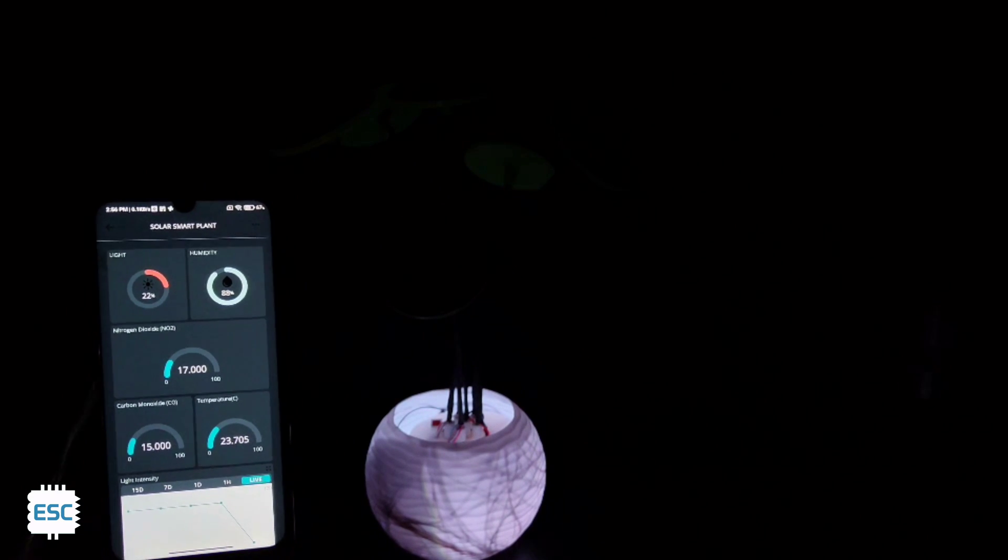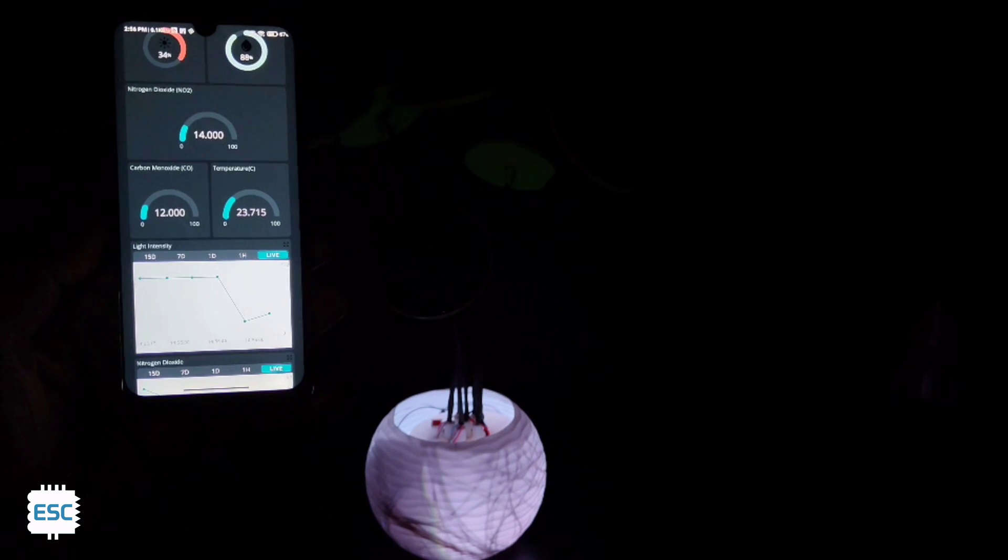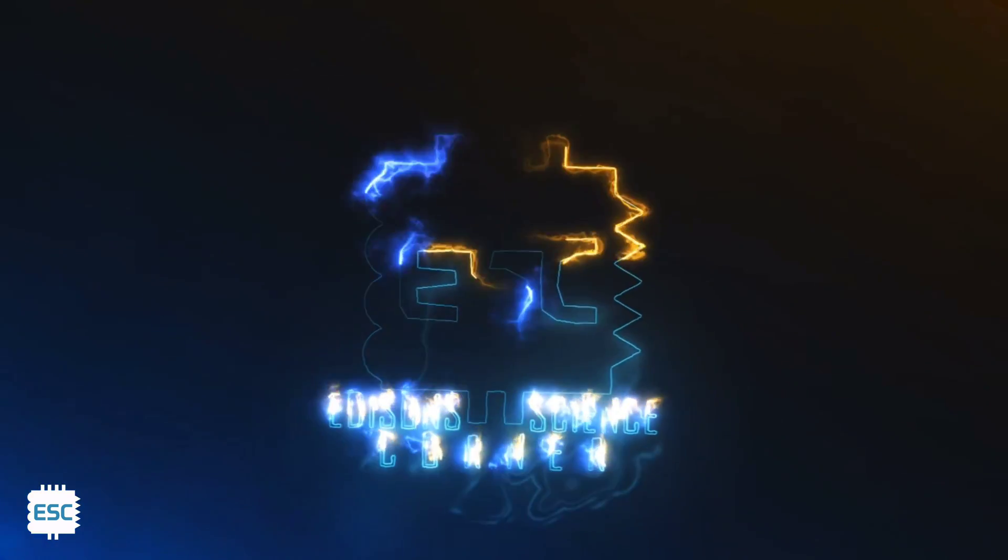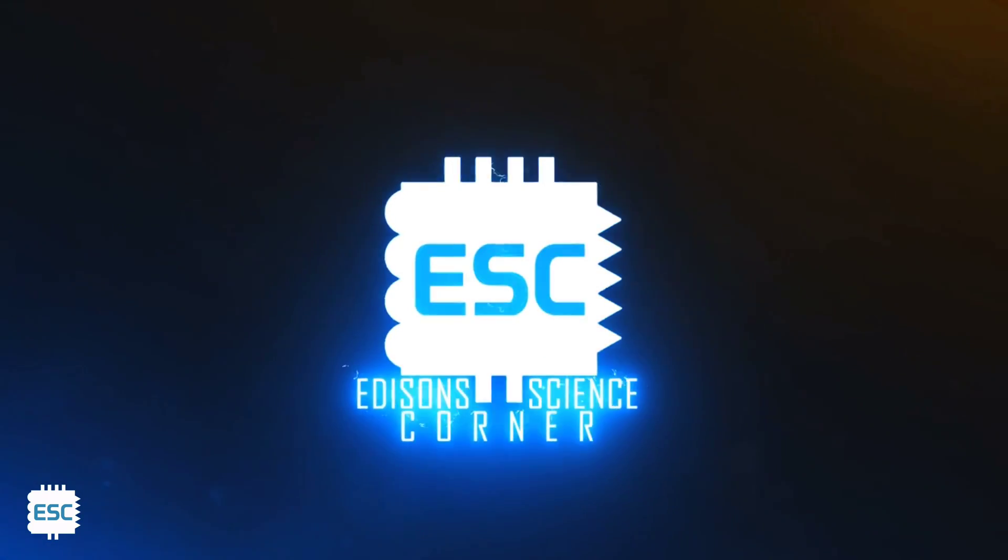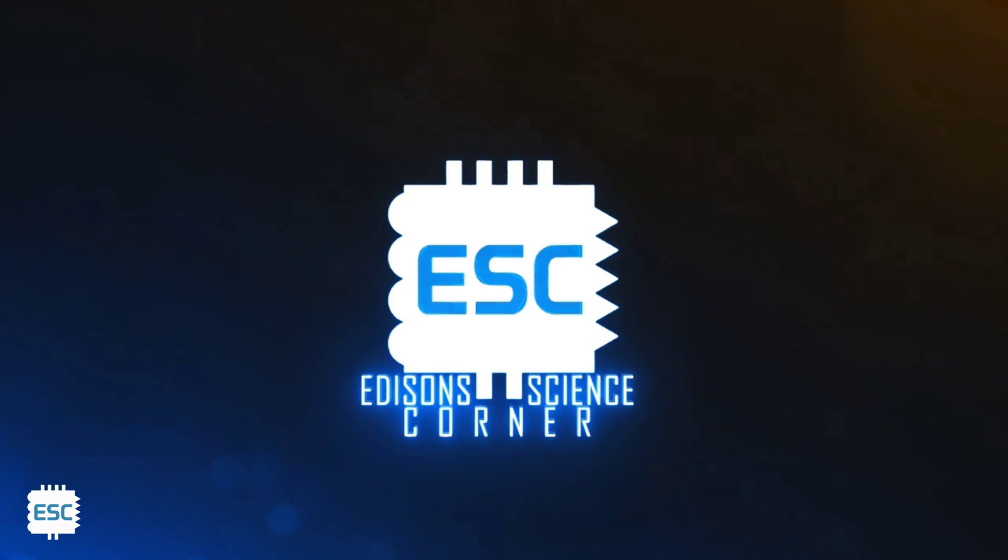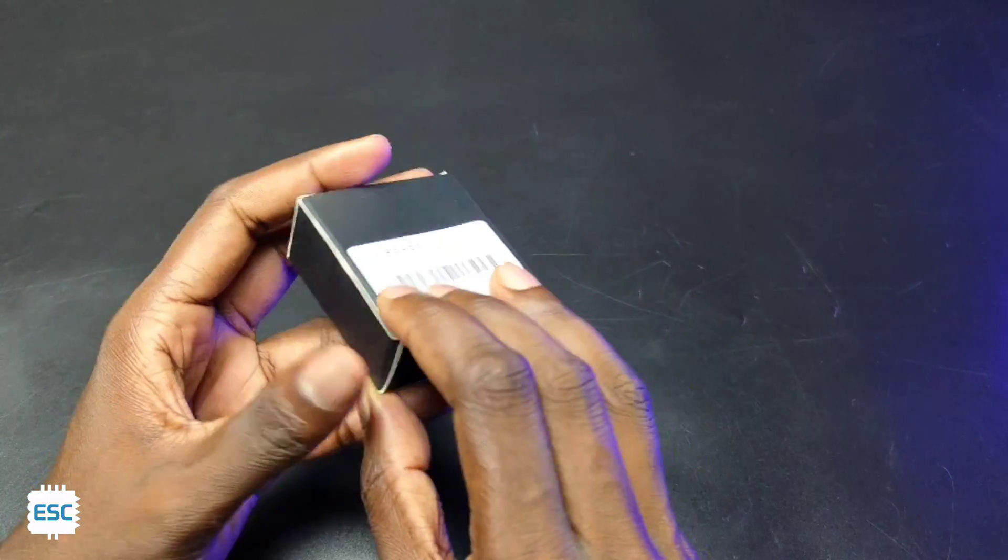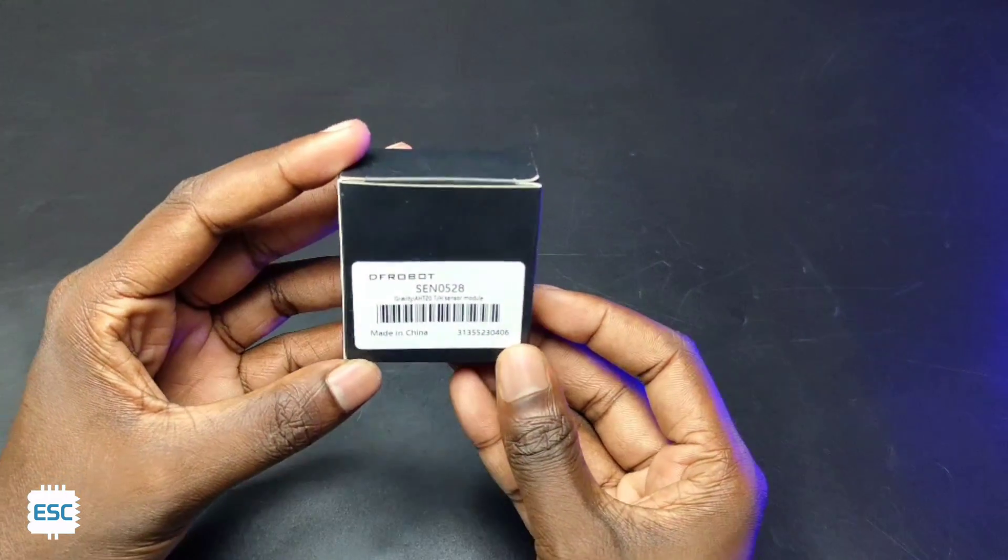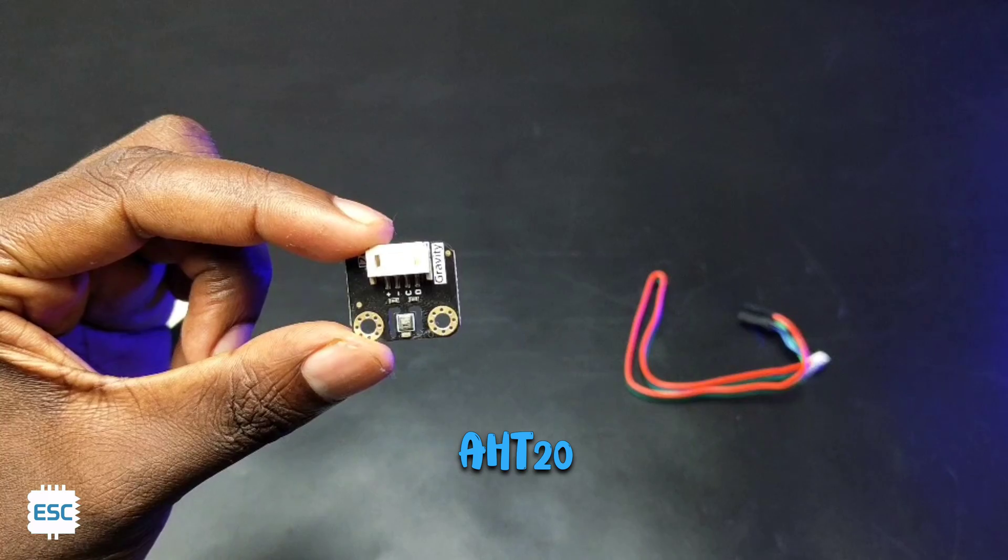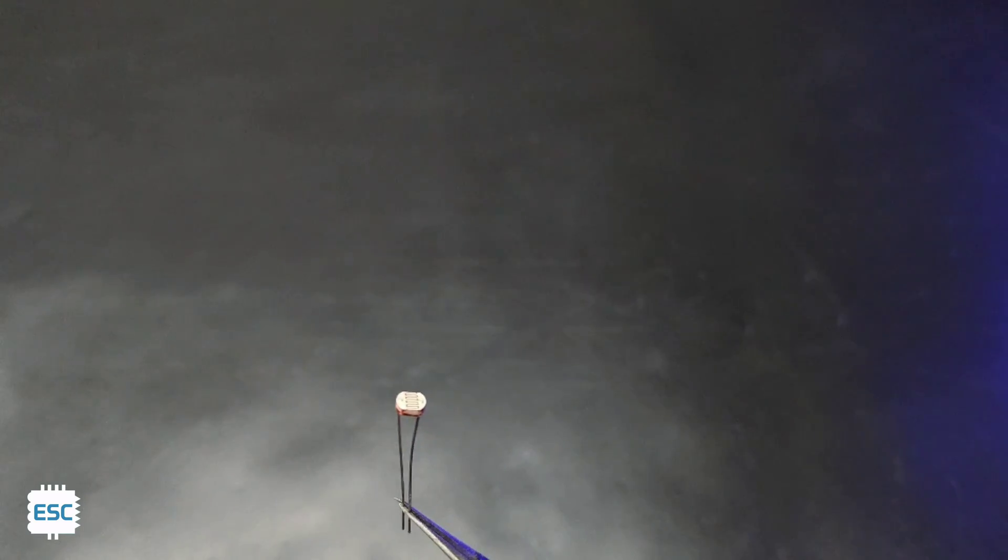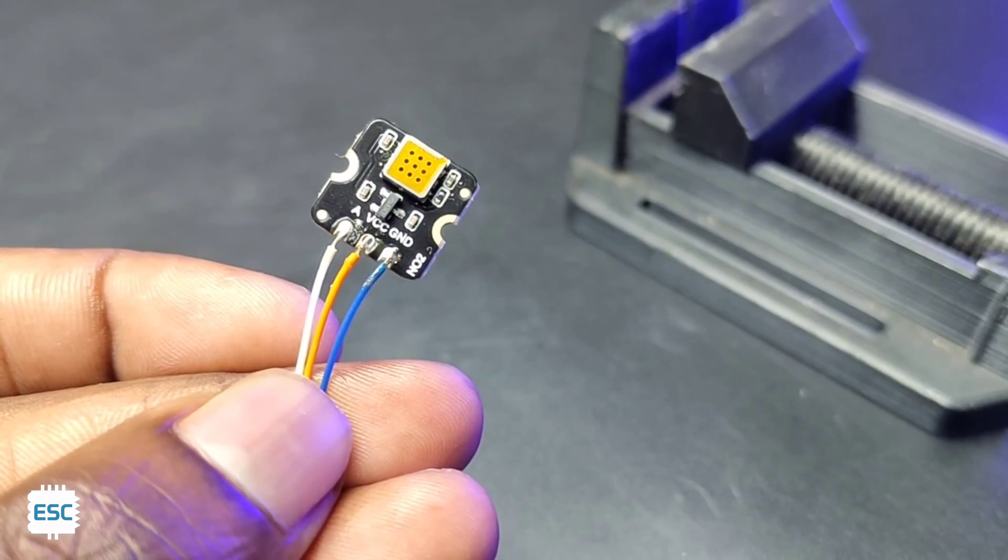Now let's see how I made this plant. So first I selected the high quality sensors from DF Robot which includes AHT20 temperature and humidity sensor, carbon monoxide sensor and nitrogen dioxide sensor. Additionally, I have used an LDR to detect the light density. Then I connected wires to these sensors.